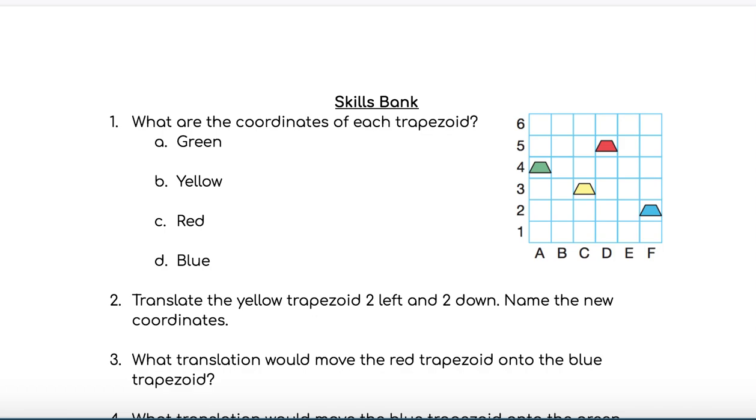For question 2, if you were to translate the yellow trapezoid 2 left and 2 down, what coordinates would it be located at? For question 3, what translation would move the red trapezoid onto the space where the blue trapezoid is located?